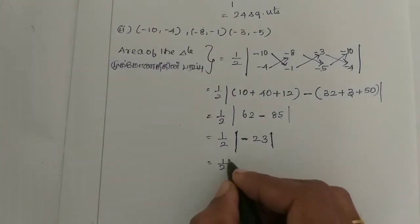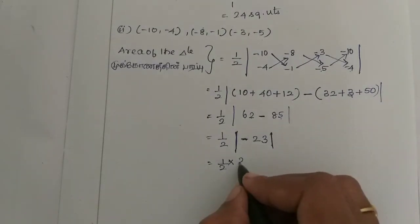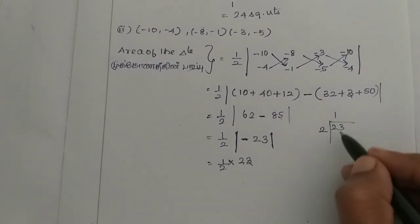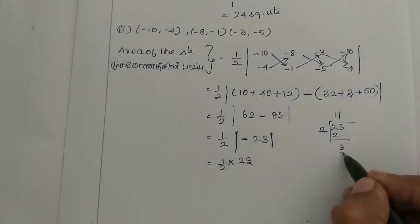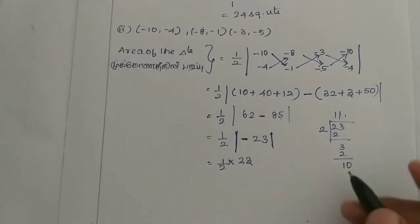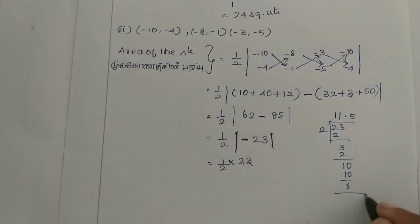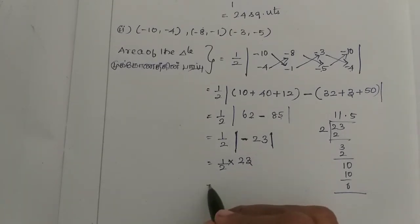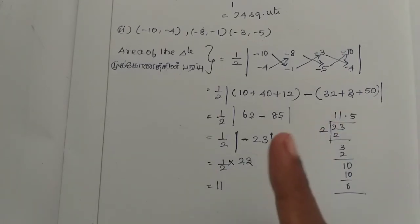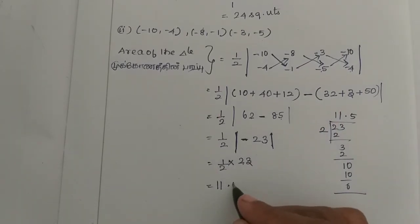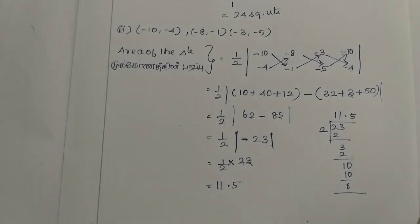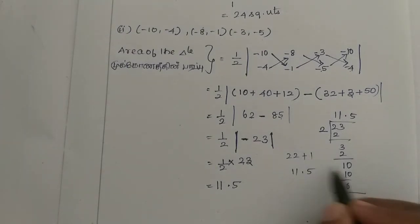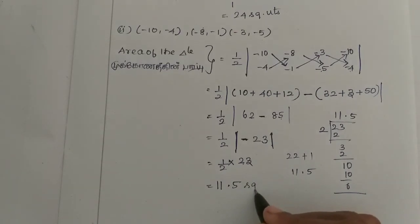Half into minus 23 — the modulus comes back to the value — this is plus 23. After modulus, 23 divided by 2. 23 is equal to 22 plus 1. 22 divided by 2 is 11. Then 1 divided by 2 is equal to 0.5. So it is equal to 11.5 square units.